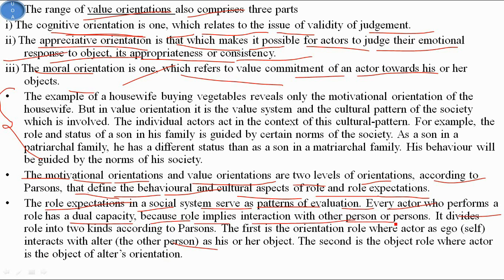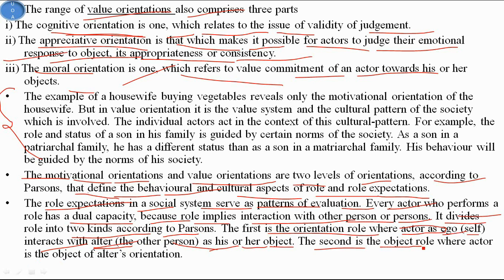Because role implies interaction with another person, Parsons divides role into two kinds. First is the orientation role, where the actor — ego or self — interacts with the alter, and that other person is the object. Second is the object role, where the actor is the object of the alter's orientation.